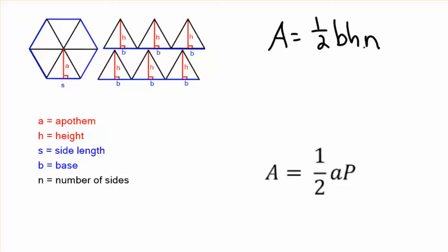So here we go. Area is still going to be one-half of base times height times n, but we're going to change the name of them. Remember, base is the same as the side length, and height is the same as the apothem. So write side length s times apothem times number of sides.